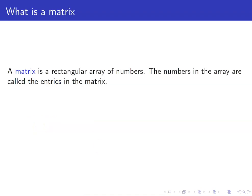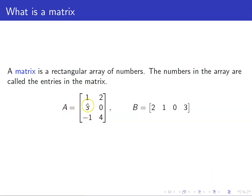What is a matrix? A matrix is a rectangular array of numbers. The numbers in the array are called the entries in the matrix. Some examples of matrices are this one. You have your rectangular array — you just have the numbers, and the numbers that you find inside are called the entries.